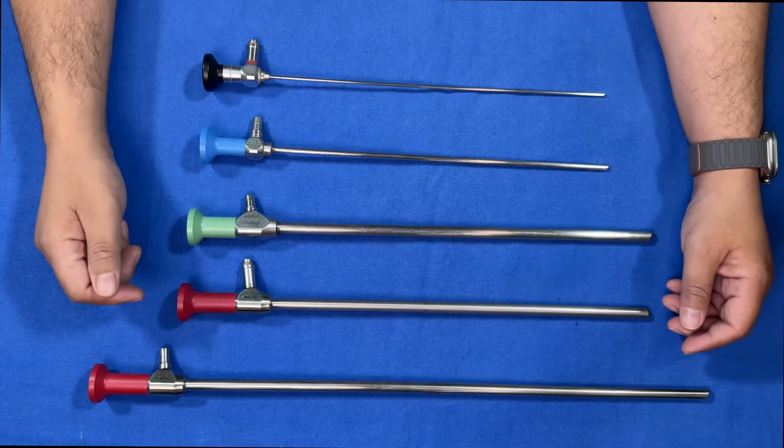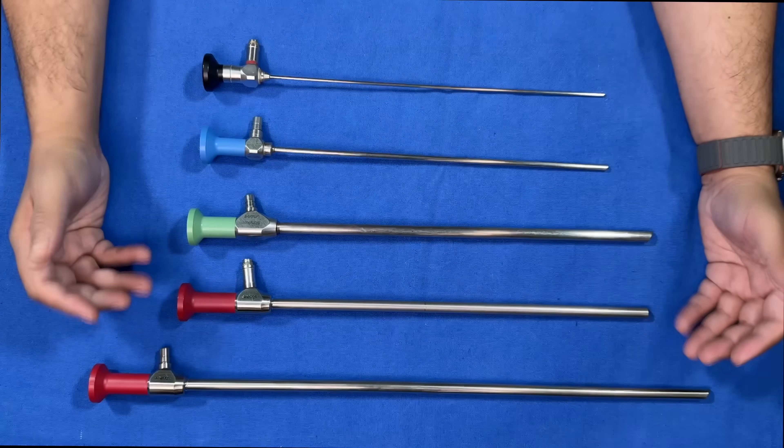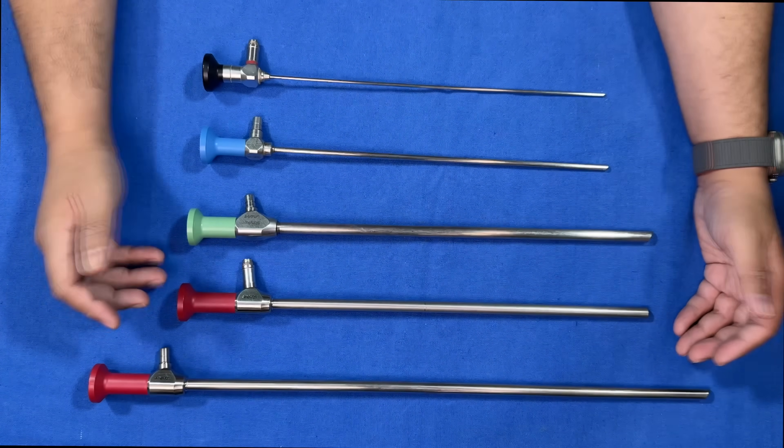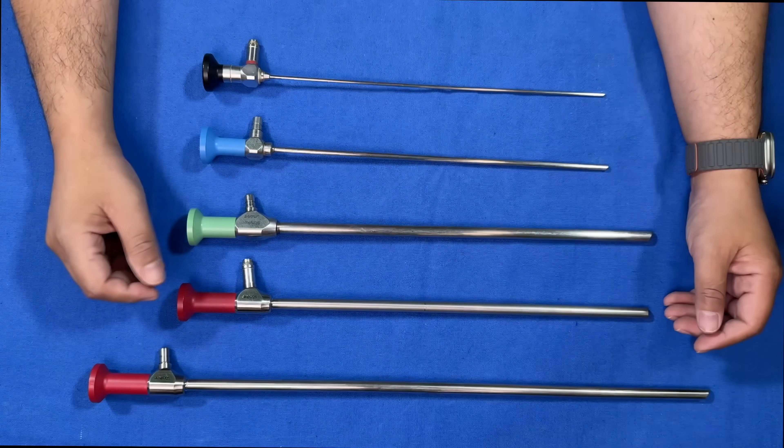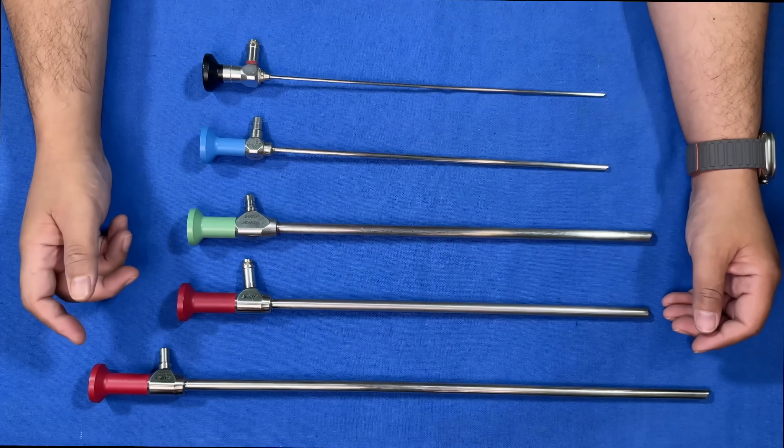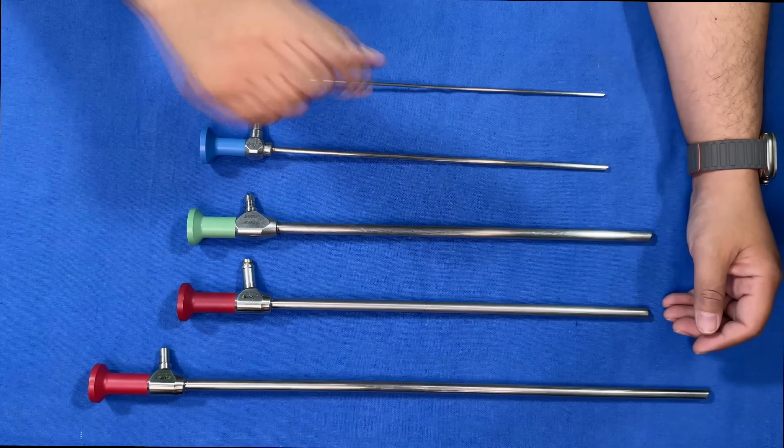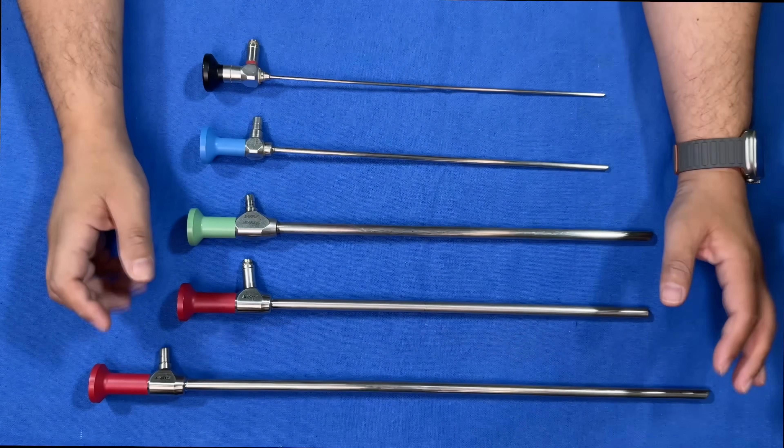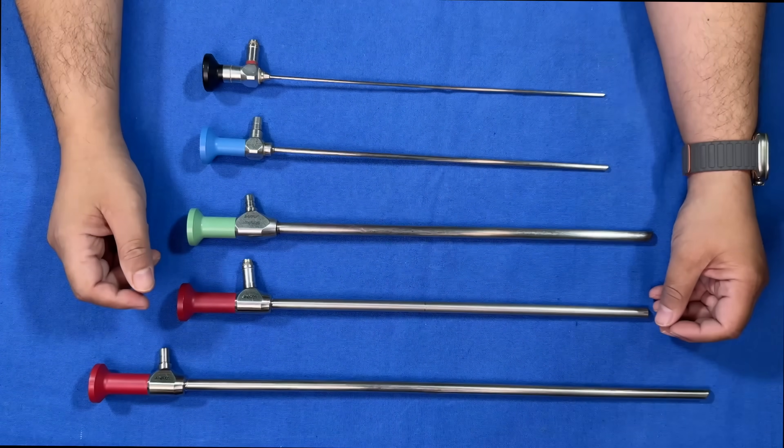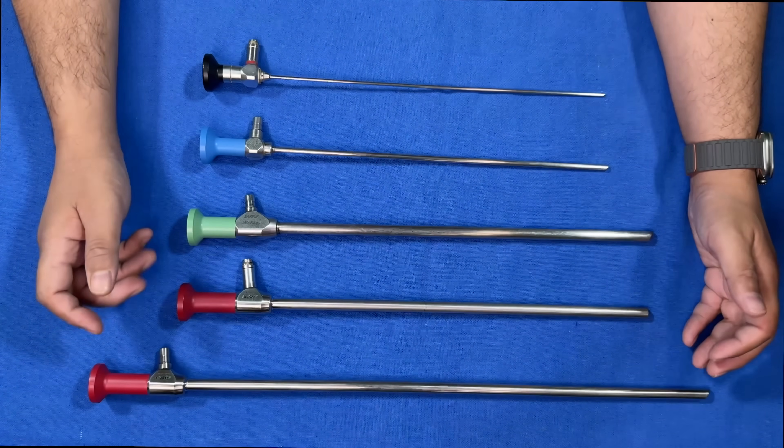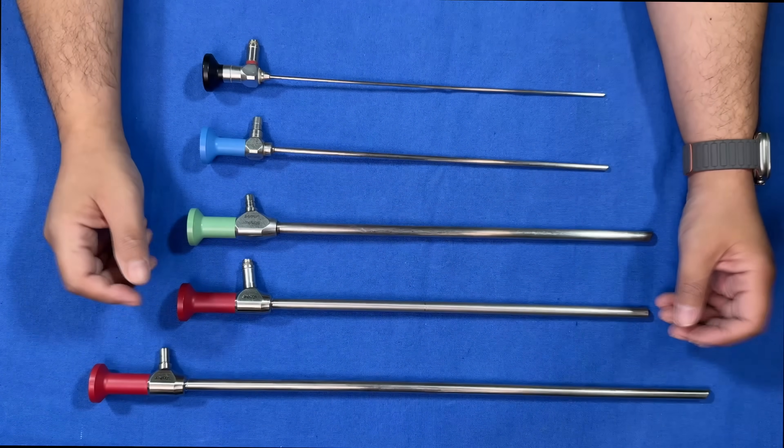For newer doctors or surgeons learning the procedures, this might be a little easier because the assistant doesn't have to rotate the camera and the error in showing a wrong angle gets negated. But most surgeons these days tend to train on a 30 degree camera straight away.